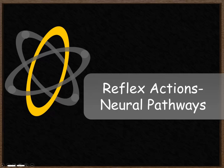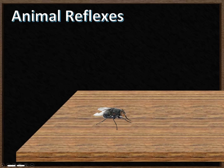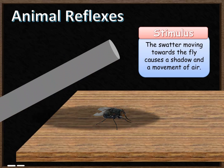Reflex actions and neural pathways. We're going to start off by thinking about what a reflex action is. We'll take an example of a fly. The fly is currently sitting on a table. I'm about to expose it to a stimulus, and that stimulus is a fly swatter moving towards the fly, which causes a shadow that the fly detects.